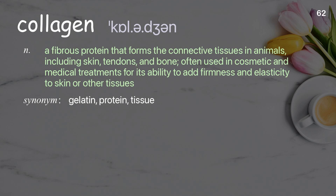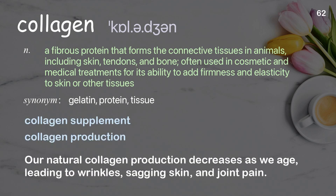Collagen: a fibrous protein that forms the connective tissues in animals, including skin, tendons, and bone, often used in cosmetic and medical treatments for its ability to add firmness and elasticity to skin or other tissues. Examples: collagen supplement; collagen production. Our natural collagen production decreases as we age, leading to wrinkles, sagging skin, and joint pain.